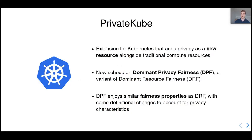That's why we built PrivateKube. It's an extension for Kubernetes, a workload orchestrator. PrivateKube adds privacy as a new resource, directly alongside compute resources. We incorporate a new scheduler called Dominant Privacy Fairness, or DPF, which is a variant of Dominant Resource Fairness, DRF, adapted for privacy. And DPF enjoys the same fairness properties as DRF, with a few changes because of the unique nature of the privacy resource.